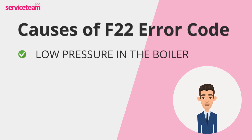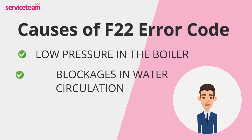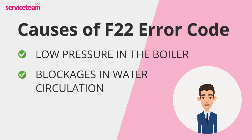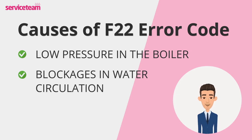This might be due to a leak, an issue with the pressure release valve, or simply the need to top up the water in the system. Another cause of the F22 fault is blockages in the system. Debris, sludge, or limescale can build up in the pipes, reducing water flow. When the boiler detects insufficient water movement, it triggers the F22 fault code.